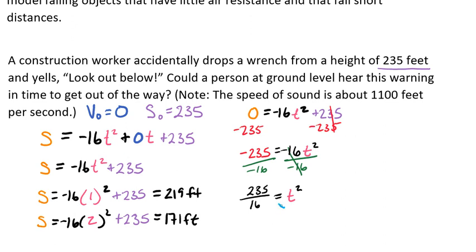Now we're going to square root both sides. And because we're dealing with a real-life problem, we're not going to have negative seconds, so we don't have to worry about that particular piece here. We're going to break this apart, and we're going to have t equals the square root of 235 over the square root of 16. We can simplify that to t equals the square root of 235 over 4. We're going to plug that in the calculator and get an approximate answer. We find that it's going to take 3.83 seconds.